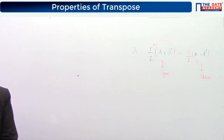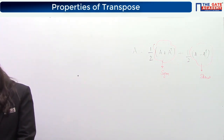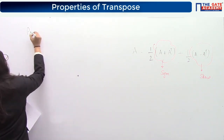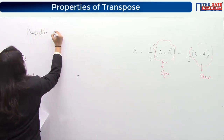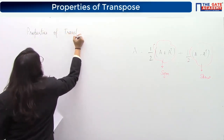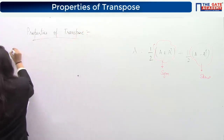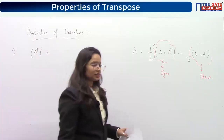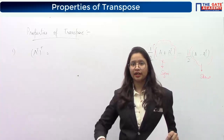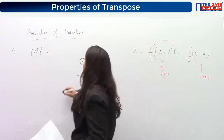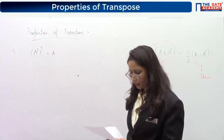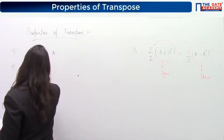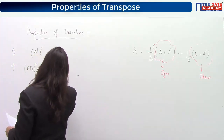Now let us write down the properties of transpose. First property: the transpose of A transpose is A itself — if you change rows into columns and again columns into rows, you get back the same matrix. Second property: AB transpose equals B transpose A transpose.